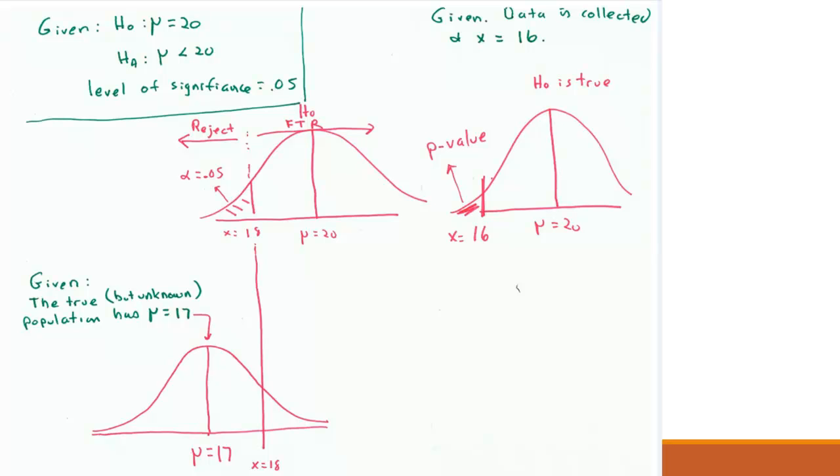But now we have something that we know. We have an x of 16. So when we look at p values, we're going to look at it's calculated with the distribution where HO is true. So we just find that 16 on the HO distribution and get the area below that, in this case below 16, and that's your p value.